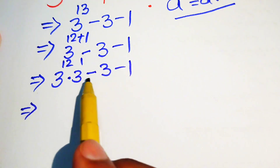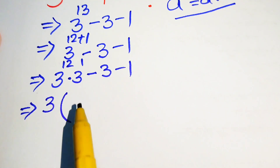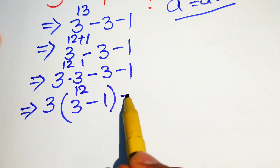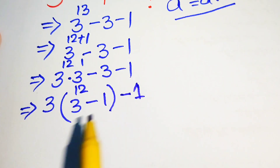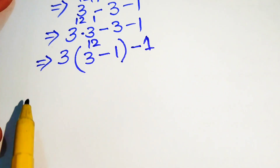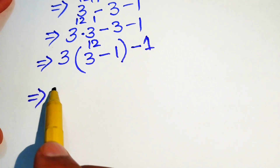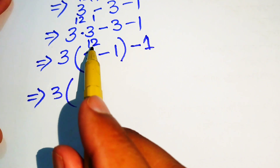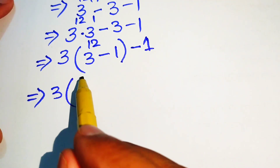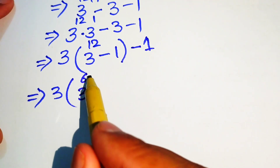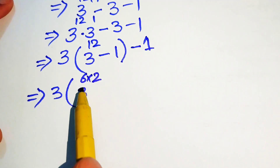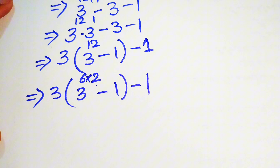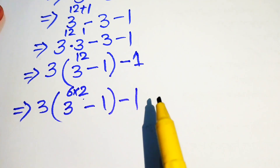Now we see that 3 is a common expression, so we take 3 common and the remaining terms are 3 to the power of 12 minus 1, and this is minus 1. In the next step we rewrite 3 to the power of 12 as 3 to the power of 6 times 2, because 6 times 2 equals 12.